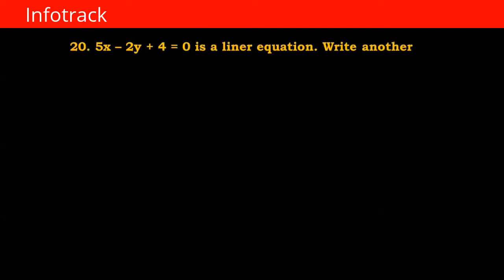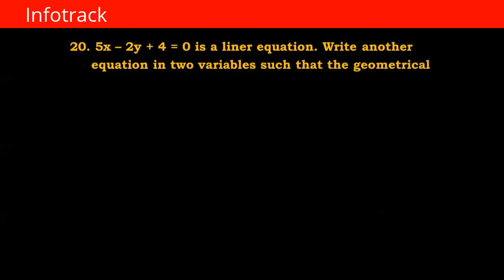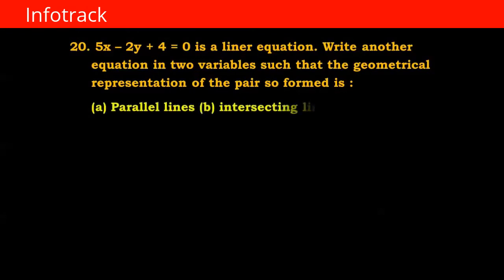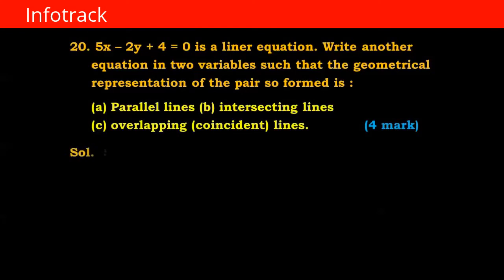Given: 5x - 2y + 4 = 0 is a linear equation. Write another equation in two variables such that the geometrical representation of the pair so formed is parallel lines, intersecting lines, or overlapping/coincident lines. We will first write this equation in standard form: 5x - 2y = -4.